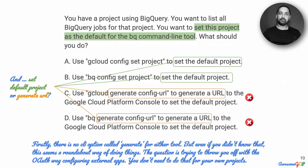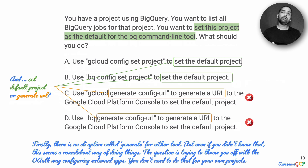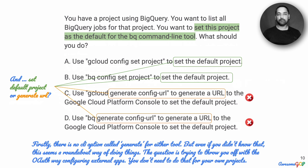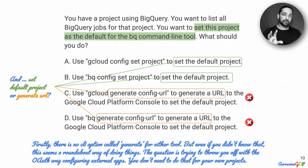Now let's look at the second set of options. Options A and C use some way to set the default project, almost directly. Since we've eliminated bq, it must be gcloud. So either you set the default project as a direct command using gcloud, or you generate a URL which directs you to the Google Cloud Platform Console where you can set the default project. The option to generate a URL and configure it on the Cloud Console seems slightly roundabout.